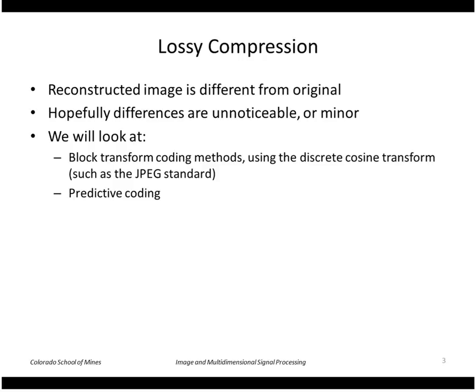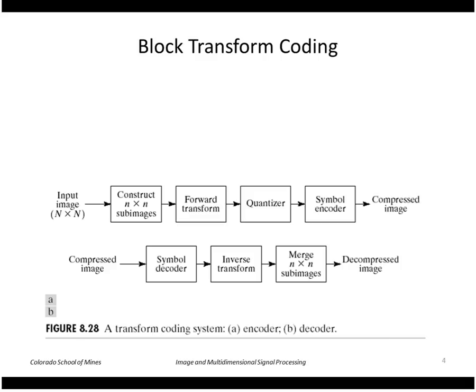In this lecture we're going to look at block transform coding methods such as the discrete cosine transform used in the JPEG standard, and predictive coding. Block transform coding divides the image into sub-images or blocks, like size n by n.